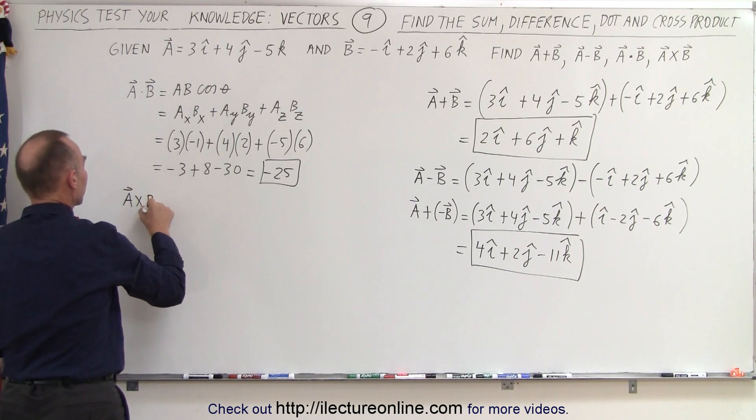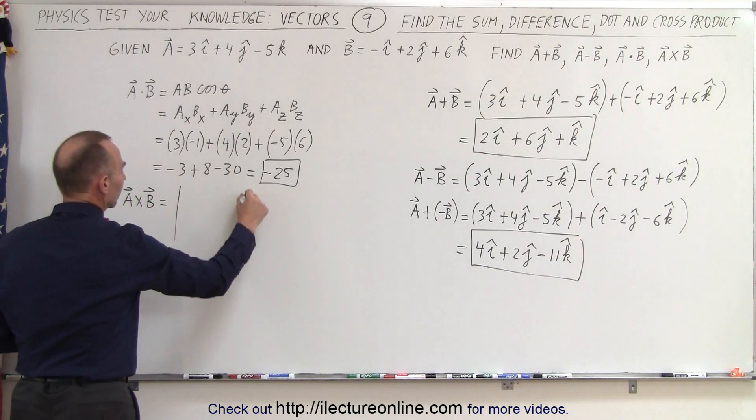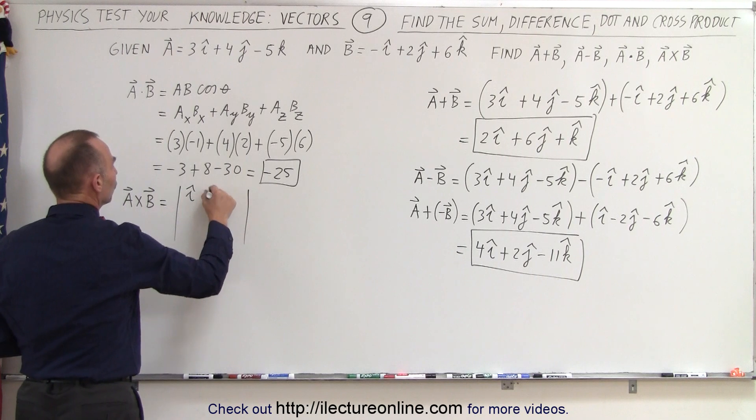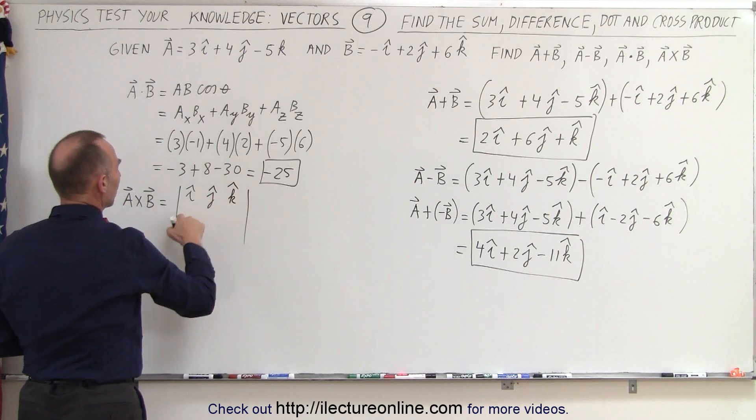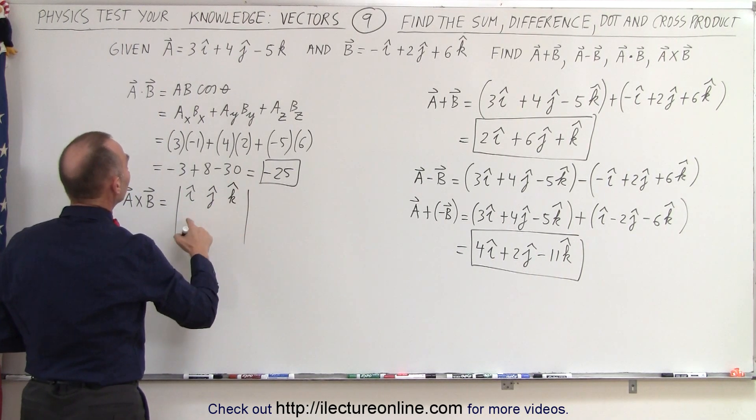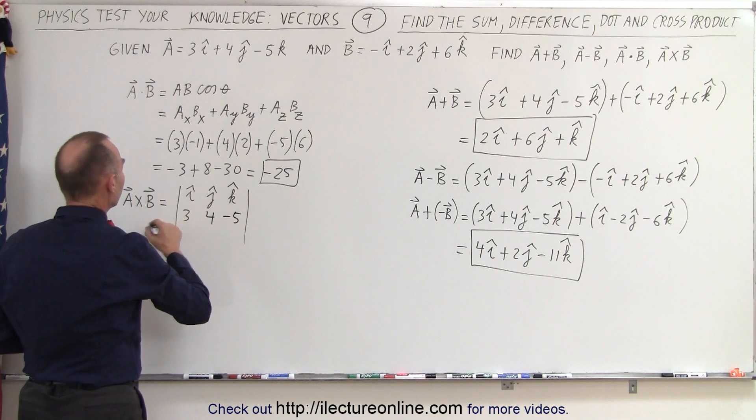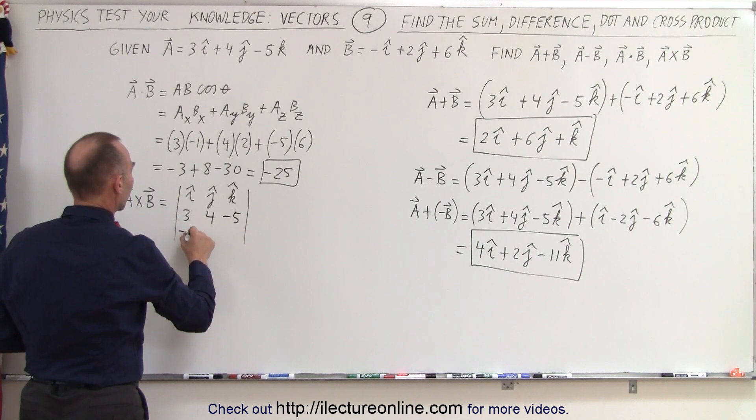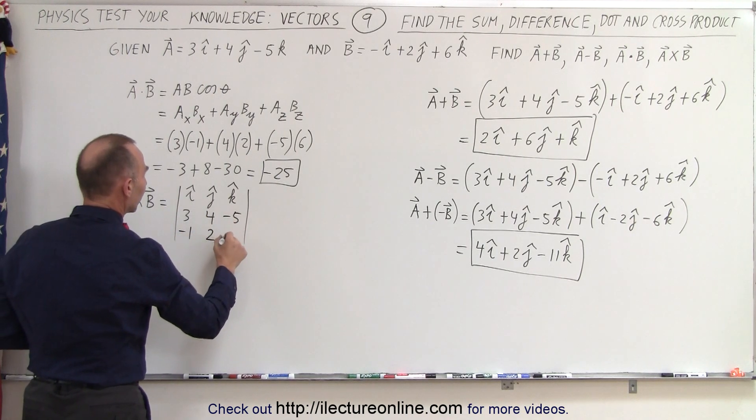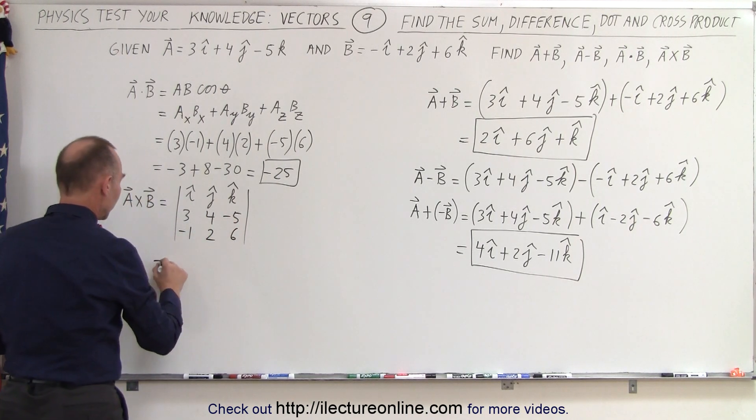A cross b is equal to the matrix. We have i, j, k. We put in all the a components, a sub x, a sub y, a sub z, and the b components, b sub x, b sub y, and b sub z. And now this becomes the following.